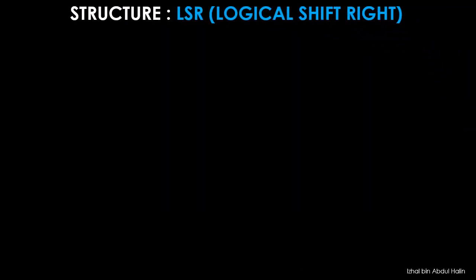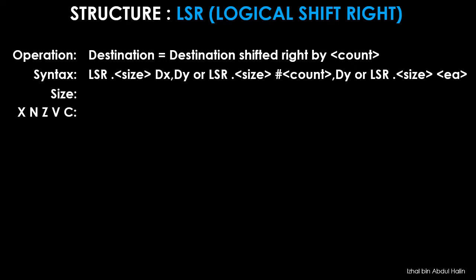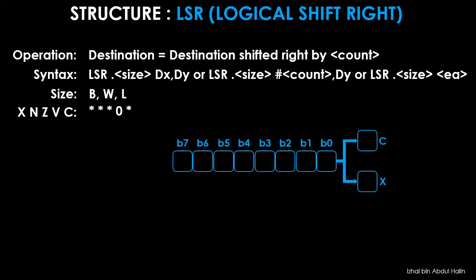Let's take a look at the LSR instruction, used to logical shift right data in a destination operand. Data is shifted one bit at a time until the number of shifts equals the specified count. The general syntax shows three variants available, with operand sizes of byte, word, and long word. All status registers are affected. For the LSR instruction, the operand's LSB is connected to the C and X flags, and the MSB is fed with a new zero each time data is shifted. For word and long word operands, just change the operand size to 16 bits and 32 bits respectively.